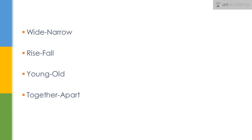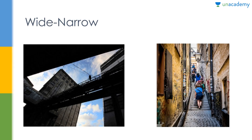This is the slide where I have put in the pair of words that we are going to discuss today. The first one is wide and narrow, rise and fall, young and old, together and apart. These are simply common sorted words. They are not very new in nature but definitely their synonyms and antonyms will give you guys an interesting set of vocabulary altogether. And very quickly we will begin with our lesson.